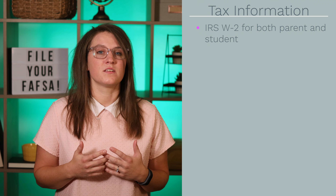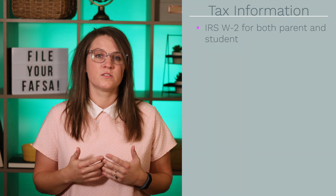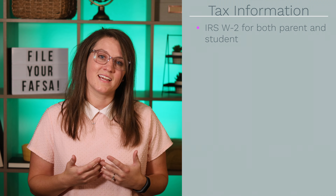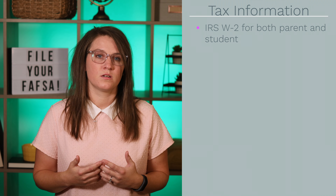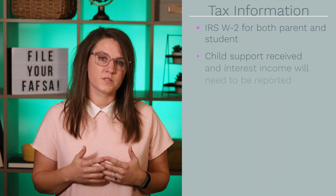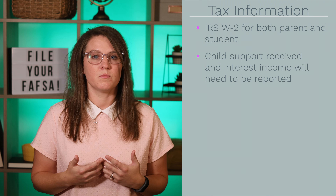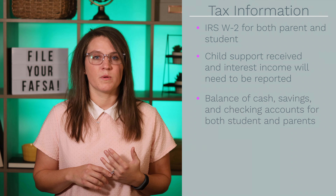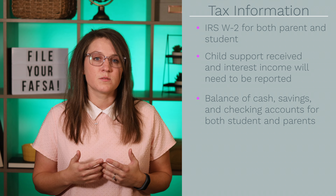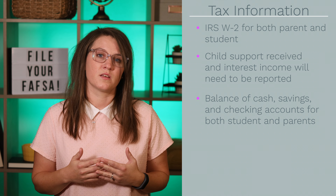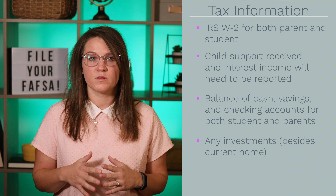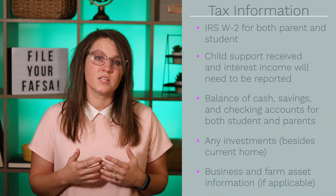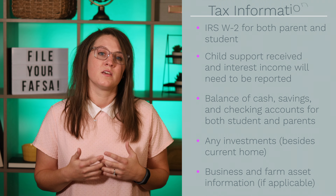The application uses tax information from two years prior. So for example, when you complete the application for the 2021-22 school year, it will ask you for 2019 tax or wage information. Records of untaxed income such as child support receipts and interest income will need to be provided as well. You'll want to have information on your cash, savings, and checking account balances for both student and parent. Investments like stocks, bonds, and real estate will need to be provided, but not the home you live in or any retirement funds. Business and farm asset information would also need to be provided for student and parents if you're a dependent student.